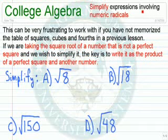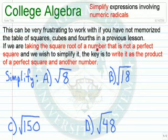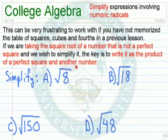In this lesson we want to simplify expressions involving numerical radicals. This can be very frustrating to work with if you've not memorized the table of squares, cubes, and fourths in a previous lesson. If we're taking the square root of a number that is not a perfect square and we wish to simplify it, the key is to write it as the product of a perfect square and another number.